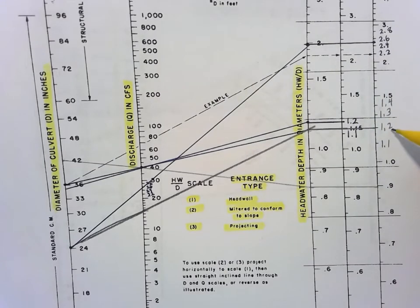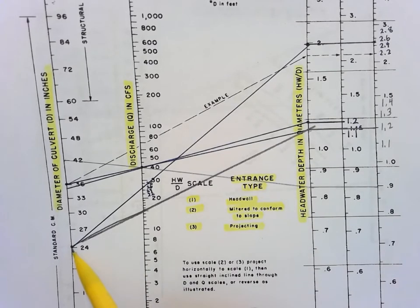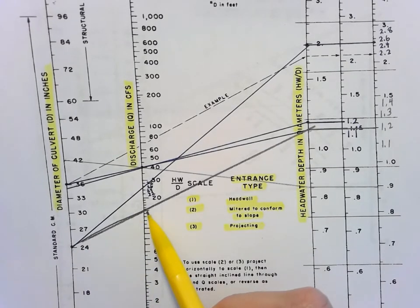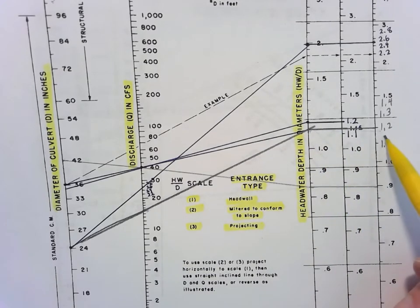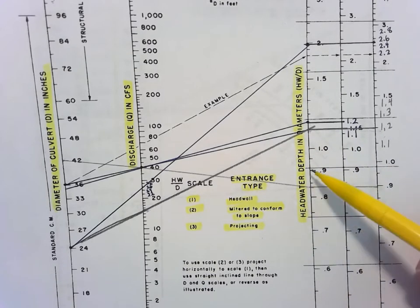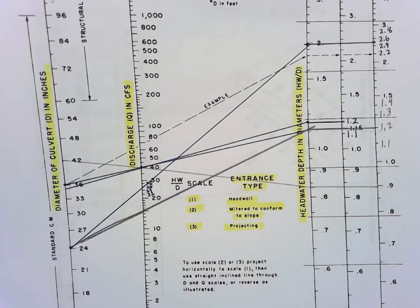This hits right at 1.2. Again, connecting the 24 inches with the 15 cfs to the first line and then straight across gives me 1.2 headwater depth in diameters, HW/D.